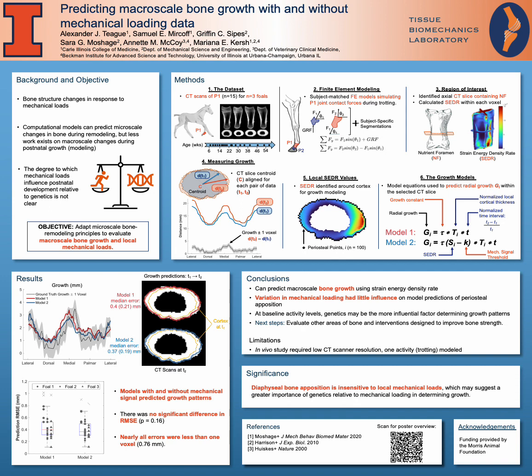To identify a region of interest and make consistent comparisons between bone cross sections despite continued growth, we identified the axial CT slice containing the nutrient foramen at each time point. We then used this CT slice as a consistent datum for measuring radial growth at different time intervals.